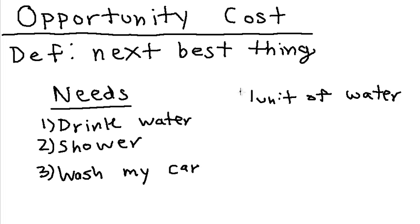I am given one unit of water. So, then I will use my water on drinking. And the opportunity cost of this choice to drink, use my water, my unit of water to drink is to shower. So, this is the opportunity cost.